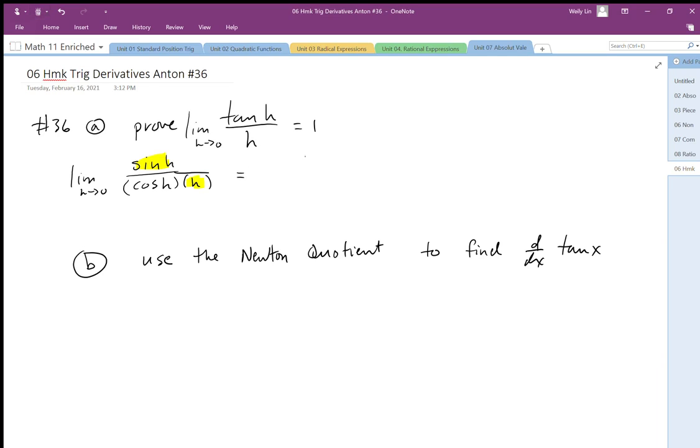This is equivalent to the limit as h goes to 0 of sin h divided by h, times the limit as h goes to 0 of 1 over cos h.